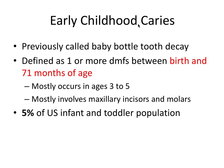Early childhood caries was previously called baby bottle tooth decay. It occurs in patients typically ages 3 to 5, and it's defined as one or more DMFS — decayed, missing, or filled smooth surfaces — in any primary tooth, and this has to be between birth and 71 months of age. This doesn't necessarily mean they have rampant caries on every single tooth; it's just that they occur early on between birth and 71 months. The most common presentation involves the primary maxillary incisors and primary molars, and early childhood caries, or ECC, impacts about 5% of the U.S. infant and toddler population.